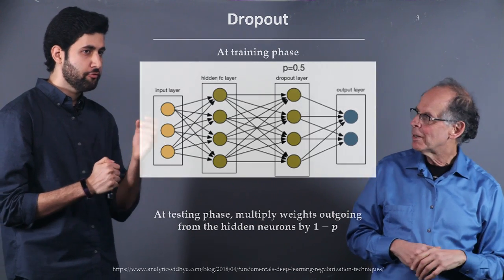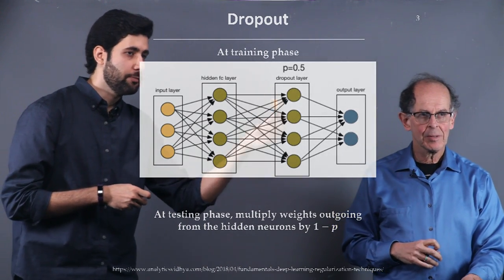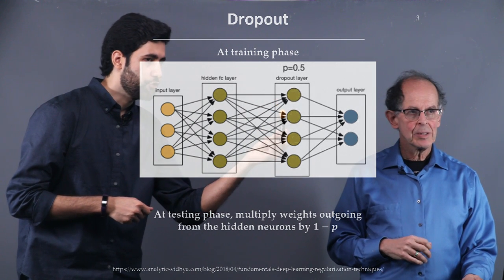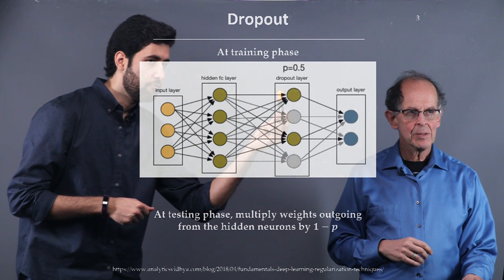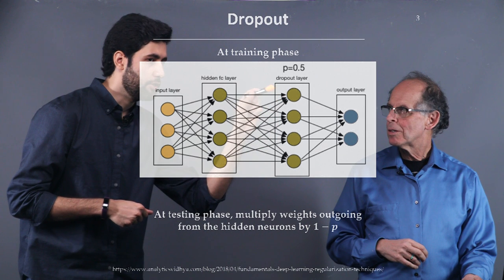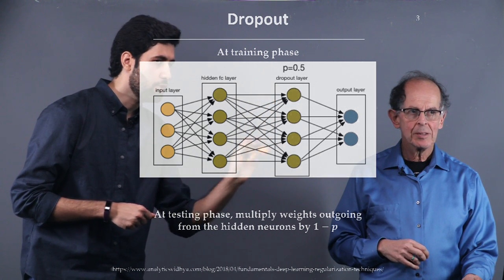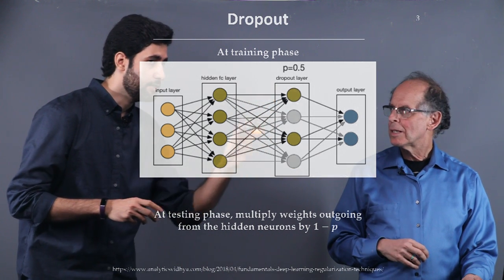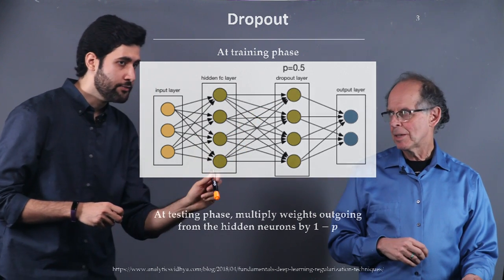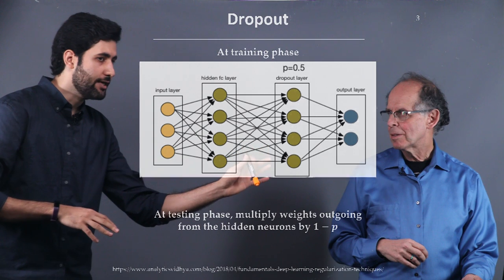If you want to show that in more detail — for example, if you have dropout on a layer, in each iteration with some probability, we cancel out and remove some neurons. This is in the training phase. In the test phase, we fire all neurons — we activate and use all the neurons.